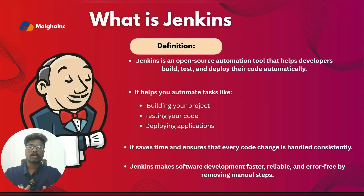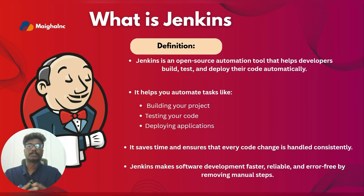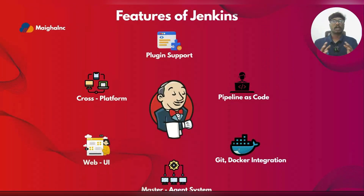So what actually is Jenkins? Jenkins is an open source automation server. It helps automate the process of building, testing, and deploying code — exactly what we need in a DevOps pipeline. Instead of doing things manually, Jenkins runs our pipeline automatically. It's like a small assistant that never sleeps, and that's why it's one of the most widely used tools for implementing CI/CD.